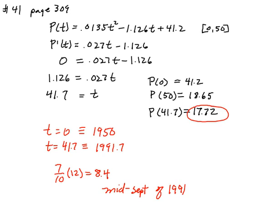And what is the percentage at that point? At 41.7 or in mid-September of 1991, the percentage was 17.72%, the percent of men age 65 and above in the workplace.